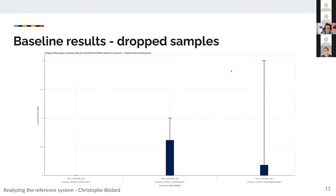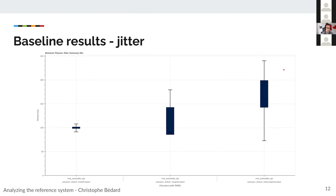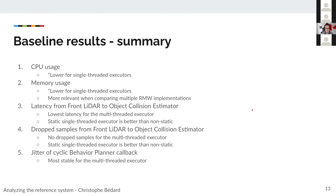Looking at dropped samples, the multi-threaded executor has no dropped samples at all — probably because it can process everything correctly with enough processing power. For jitter, the multi-threaded executor is again quite clearly the best: it hits its 100-millisecond period very well, while the others are not as good. Interestingly, the static single-threaded executor is worse than the regular single-threaded one. These results are pretty much expected — the real interesting results will come later with the other executors.